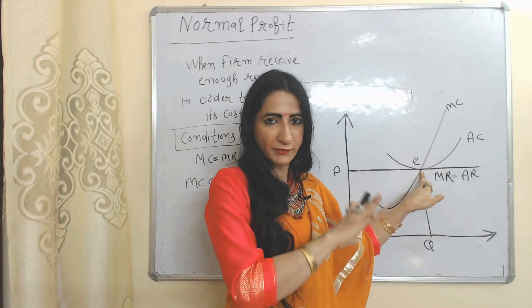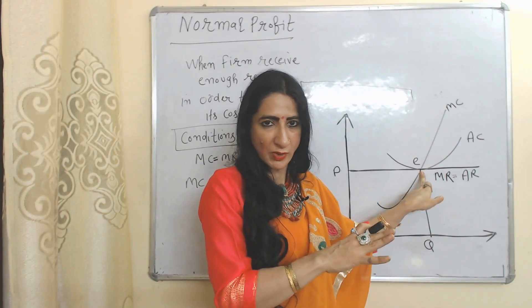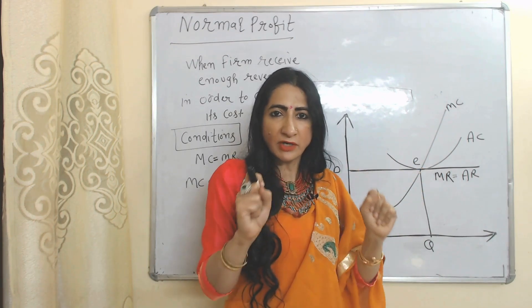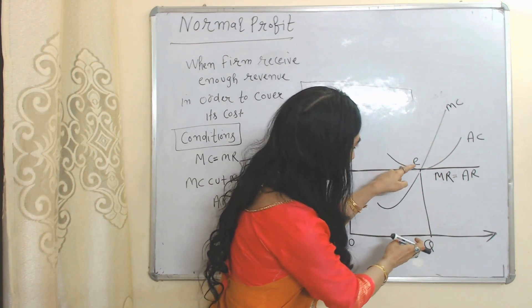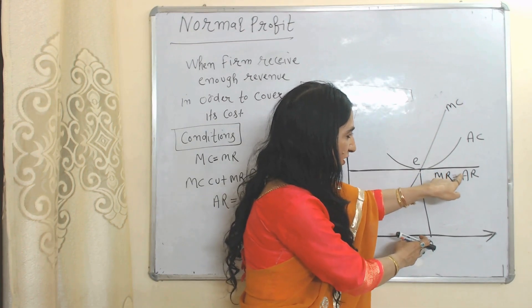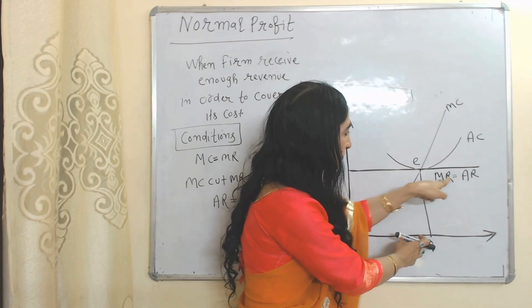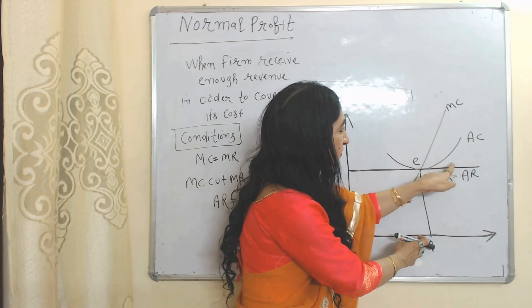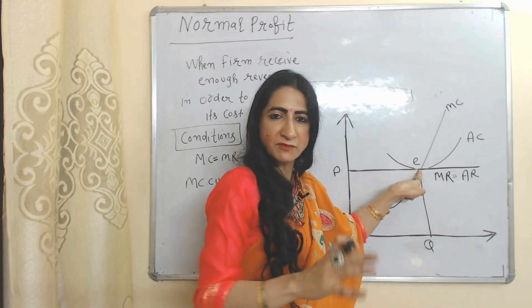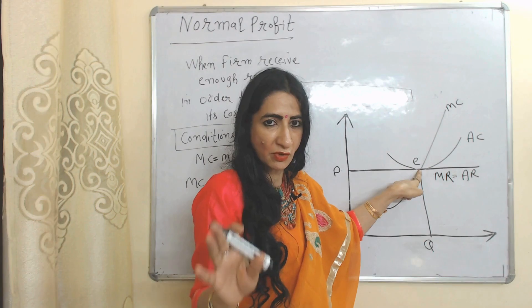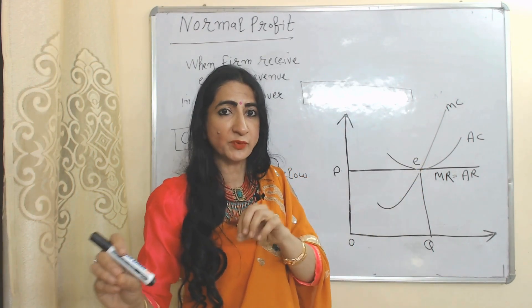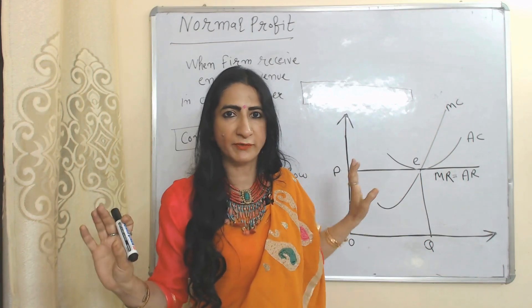The third condition of normal profit is also satisfied here: average revenue equal to average cost. You can see EQ is our average revenue — this horizontal line represents our average revenue — and EQ is our average cost. That means at this E point, average revenue is equal to average cost. So E point will be called the normal profit point because at this point all conditions of normal profit are satisfied.